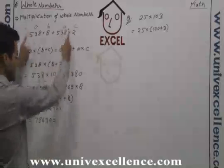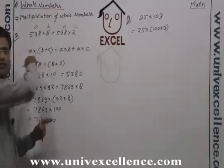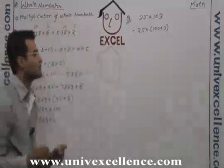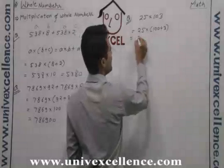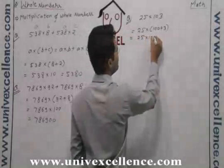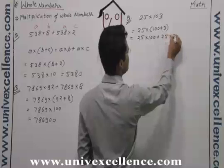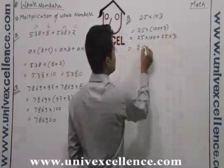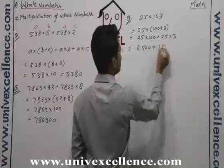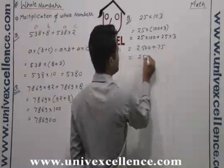Okay, now we are going to use the distributive property in this way. In this question we were using the property in this way. Now we will use it in this way. Now this is 25 into 100 plus 25 into 3. That is 2500 plus 75. It means 2575.